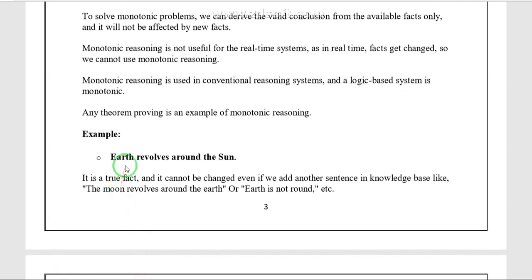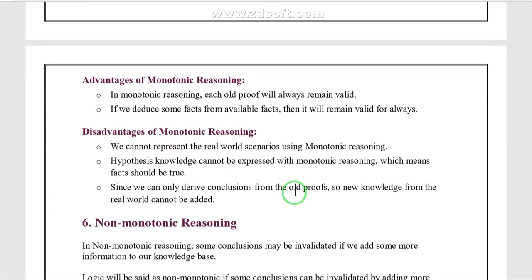For example: the Earth revolves around the Sun; the Moon revolves around the Earth. These are various statements, but the conclusion remains the same. That type of reasoning is called monotonic reasoning.